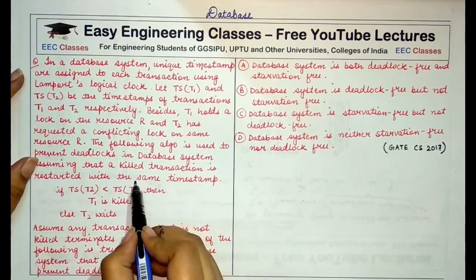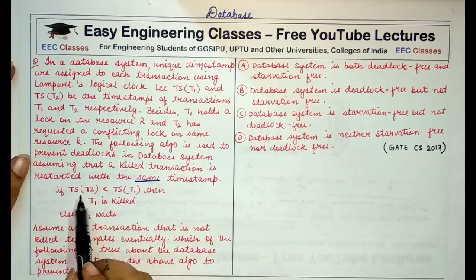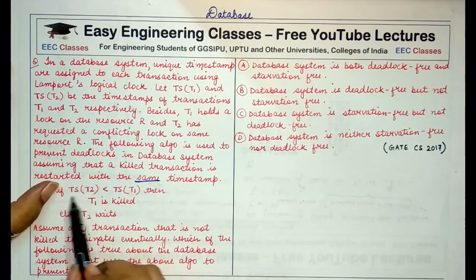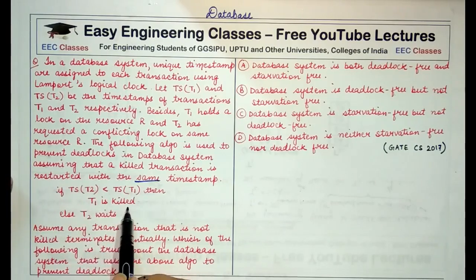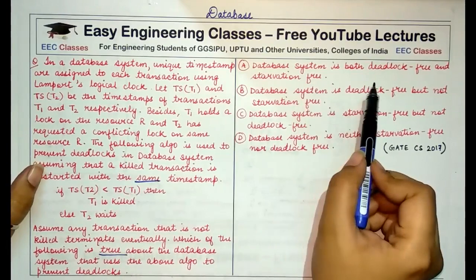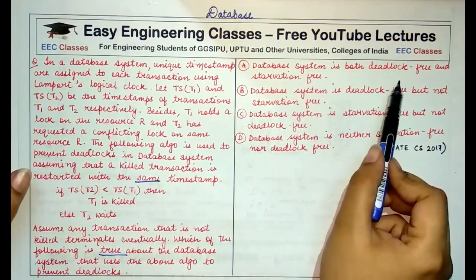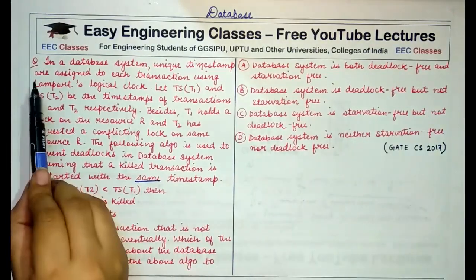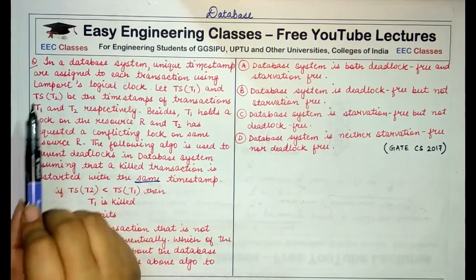Assuming that a killed transaction is restarted with the same timestamp, the algorithm is: if the timestamp of T2 is less than the timestamp of T1 — meaning T2 is older than T1 — then T1 gets killed; else T2 waits. Assuming any transaction that is not killed terminates eventually, which one of the following is true? Is the system deadlock-free, starvation-free, none of them, or either of them?